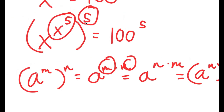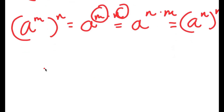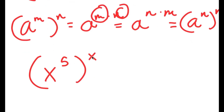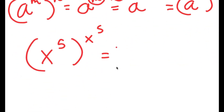So, x to the power of x to the power of 5 to the power of 5 — I can switch the places of these two. And now, this is going to equal x to the power of 5 to the power of x to the power of 5, which is equal to 100 to the power of 5.